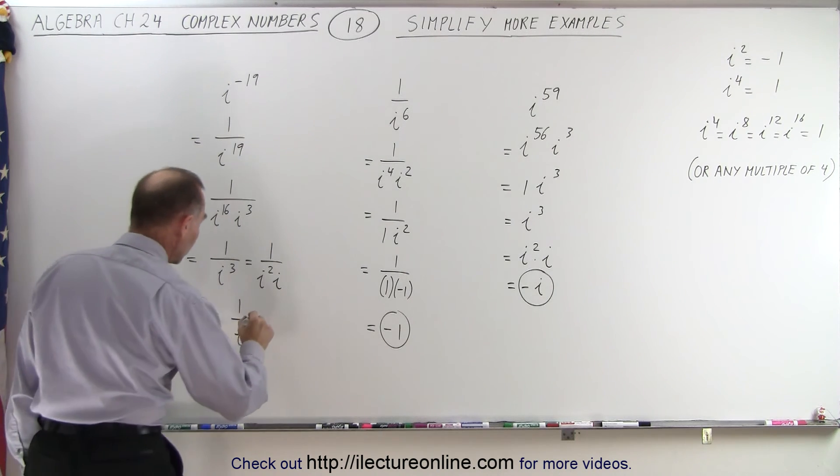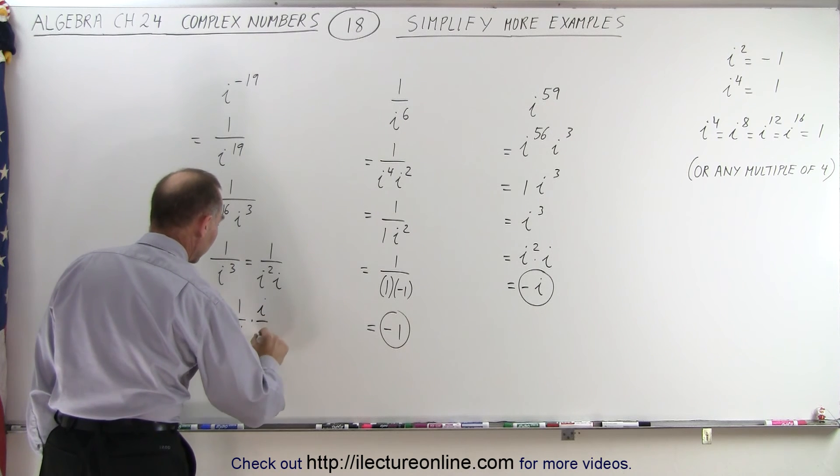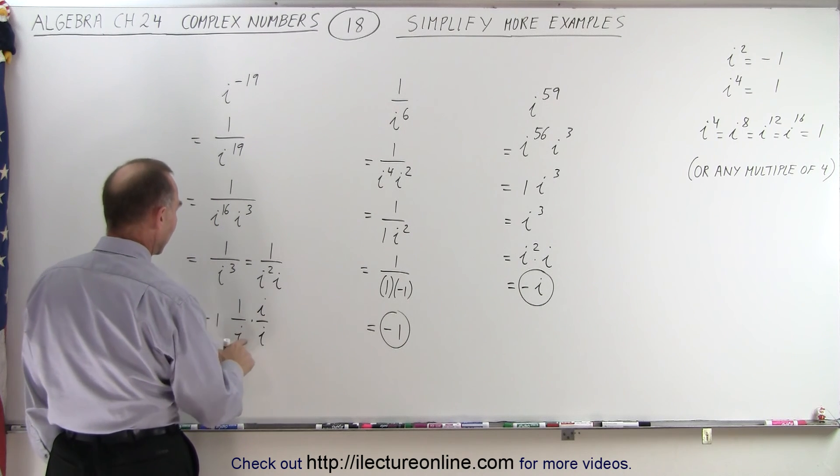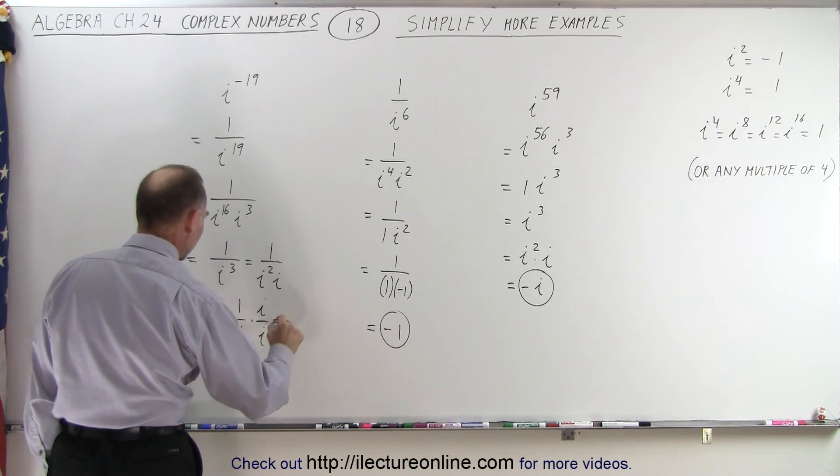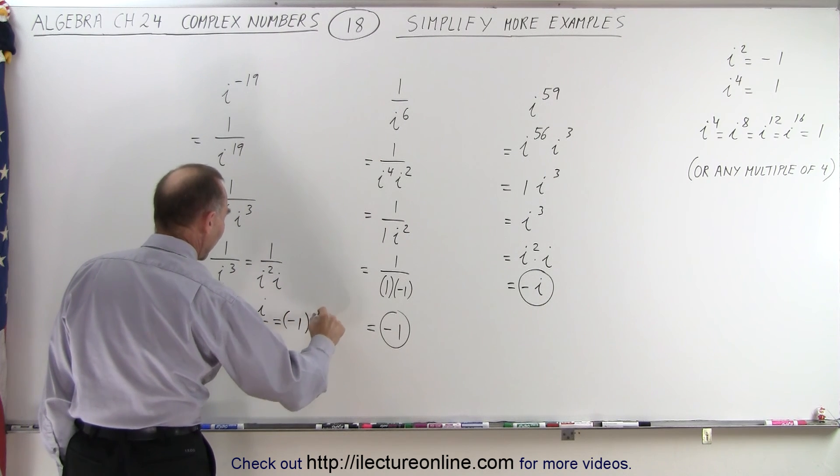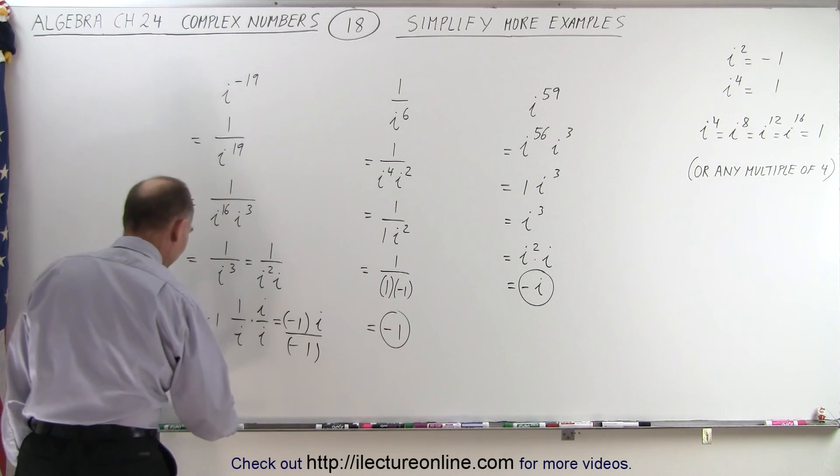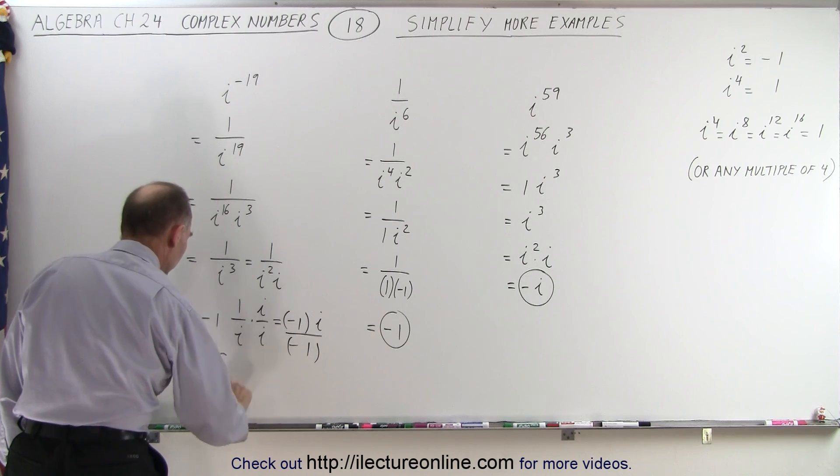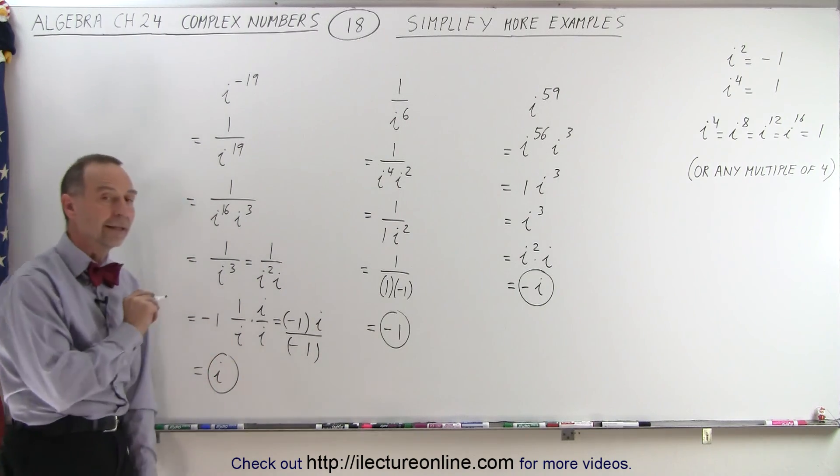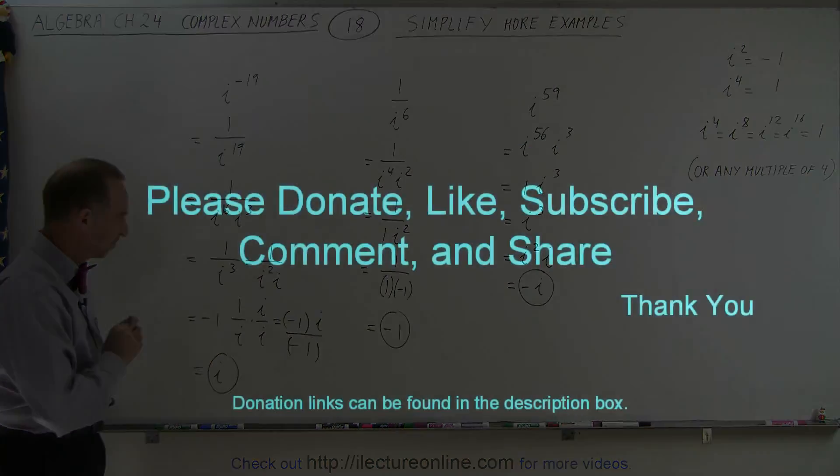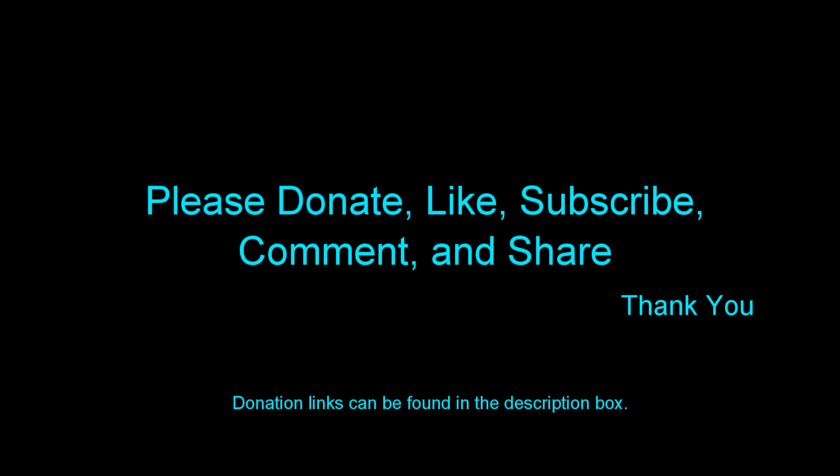And if you're not sure, all you need to do is multiply both the numerator and the denominator by i. And i times i is i squared. So this is equal to negative 1 times i in the numerator divided by i times i, which is i squared, times the negative 1 in the denominator. They cancel out. And this is simply equal to i. And that is how it's done. Thank you.